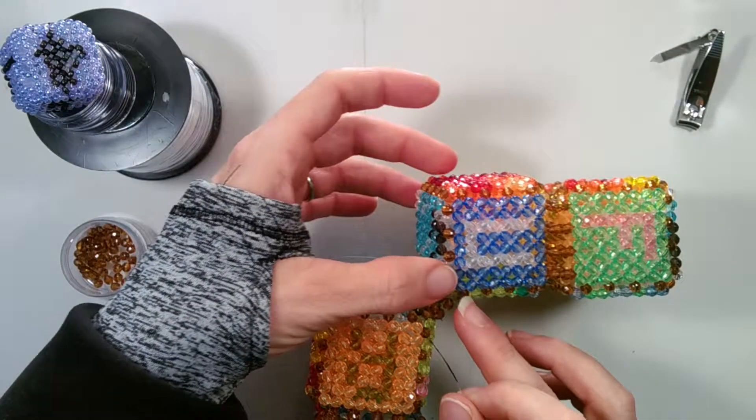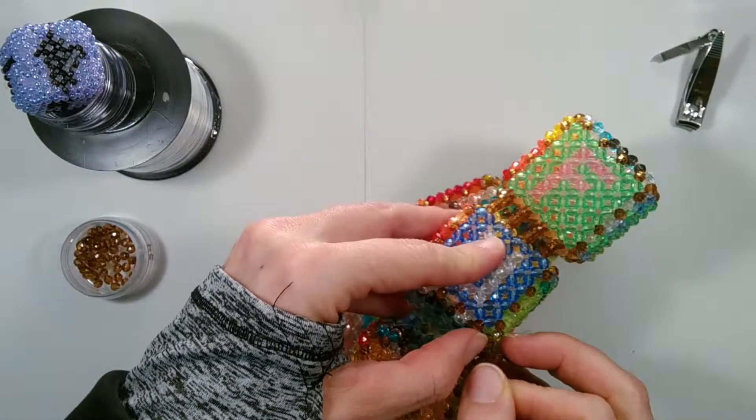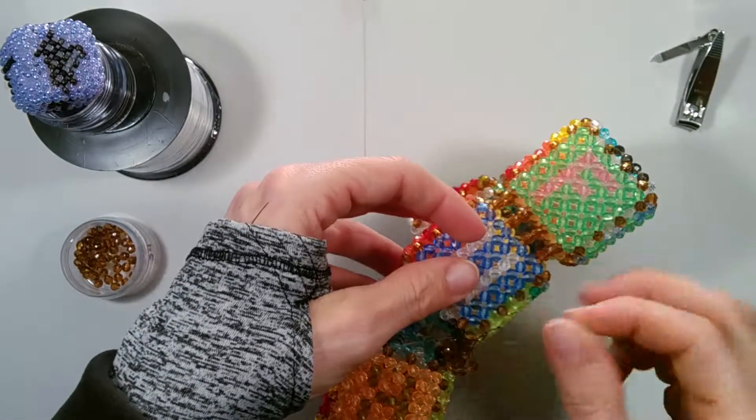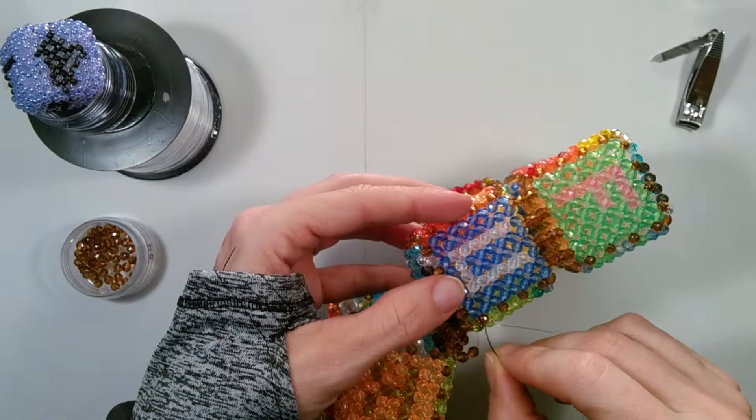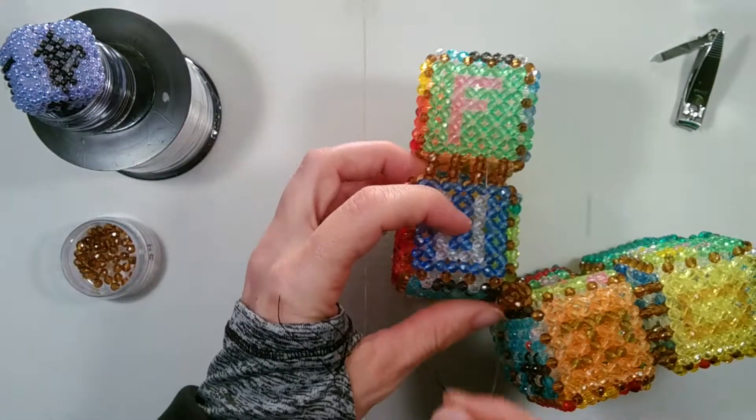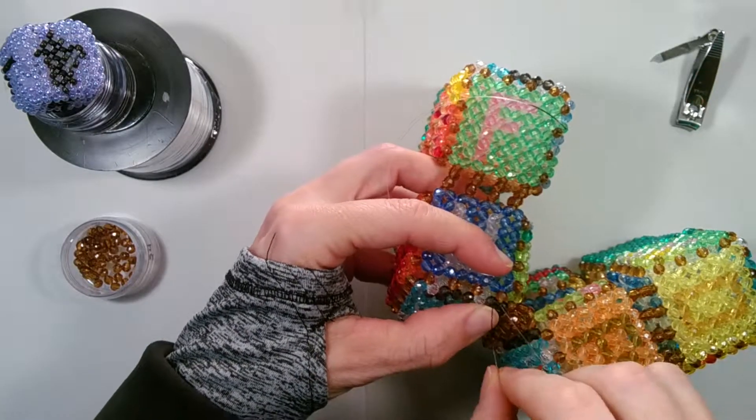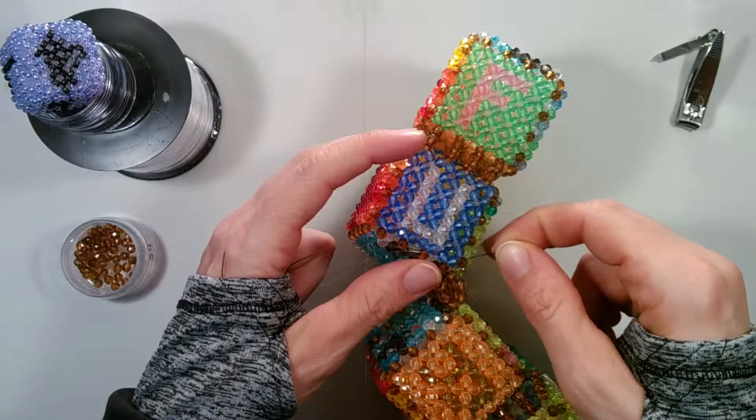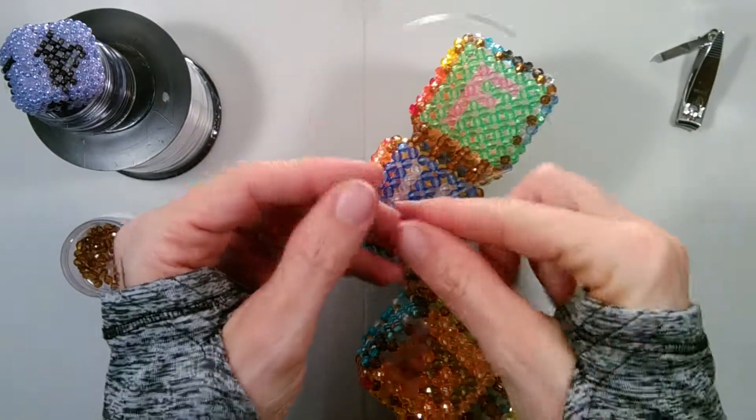And now we'll work, go through the two here and tie off in the corner bead above. Put one through the corner bead. Then tie our knot.